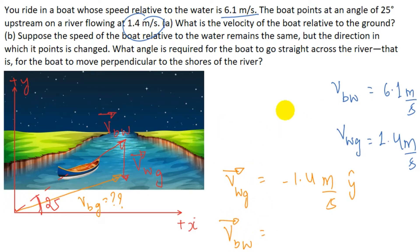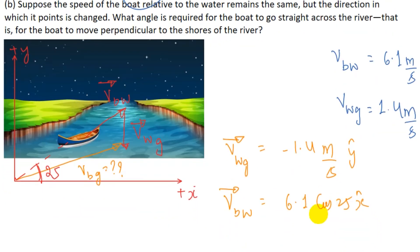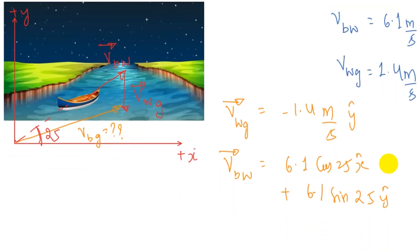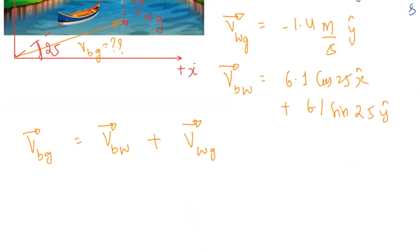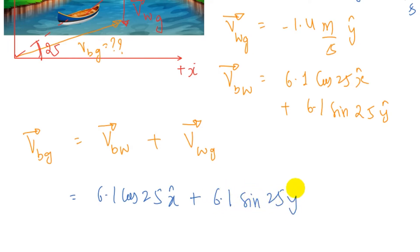The velocity of the boat relative to water makes an angle of 25 degrees. Its x component is 6.1 cosine 25 degrees in the positive x direction (x-hat), and its y component is 6.1 sine 25 degrees in the y-hat direction. The velocity of boat relative to ground is the vector sum of the velocity of boat relative to water plus the velocity of water relative to ground.